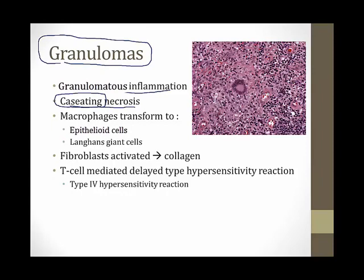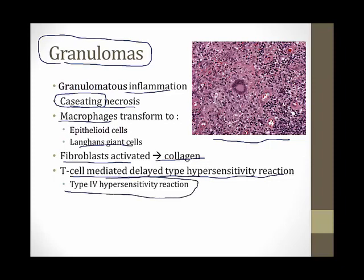Granulomatous inflammation involves macrophages called in by the immune system that transform into epithelioid cells — large cells that look like epithelial cells — and into giant cells, a hallmark of granulomatous inflammation that looks like a horseshoe. Fibroblasts are also activated and lay down collagen. Importantly, granulomatous inflammation is an example of T cell-mediated delayed type hypersensitivity — a type 4 hypersensitivity reaction involving cell-mediated immunity. Types 1, 2, and 3 involve antibodies and complement.